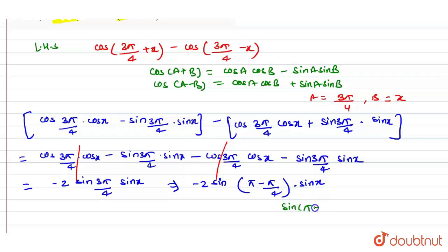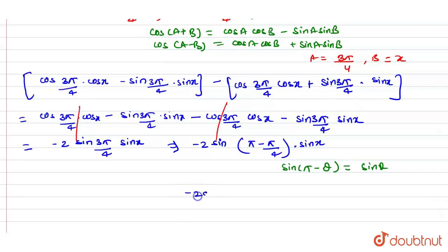So we know that sin(π - θ) is equal to sin θ. So we can write minus of 2 sin π/4 sin x.